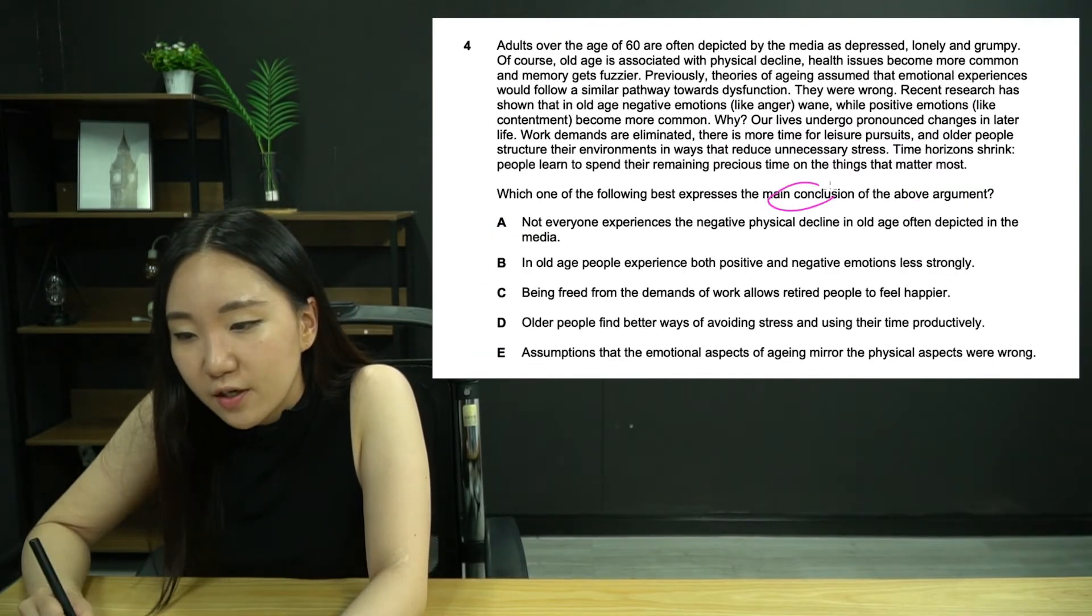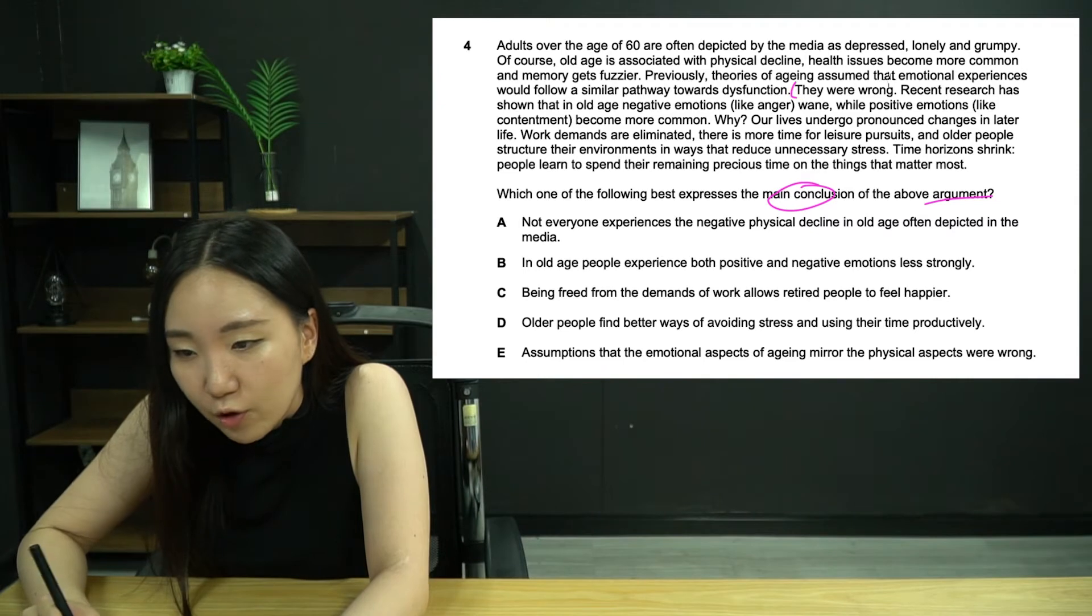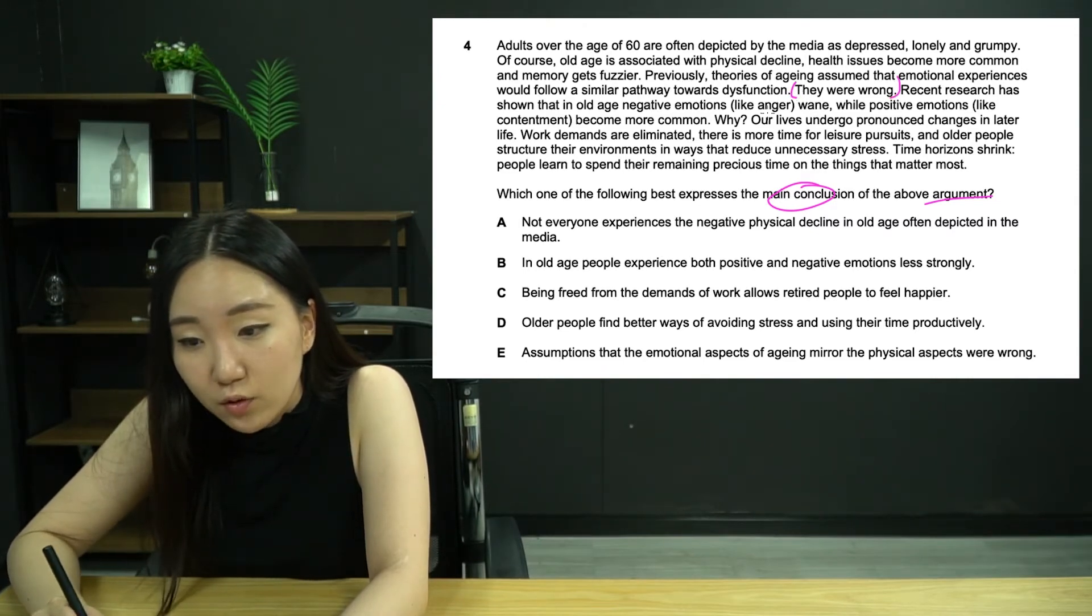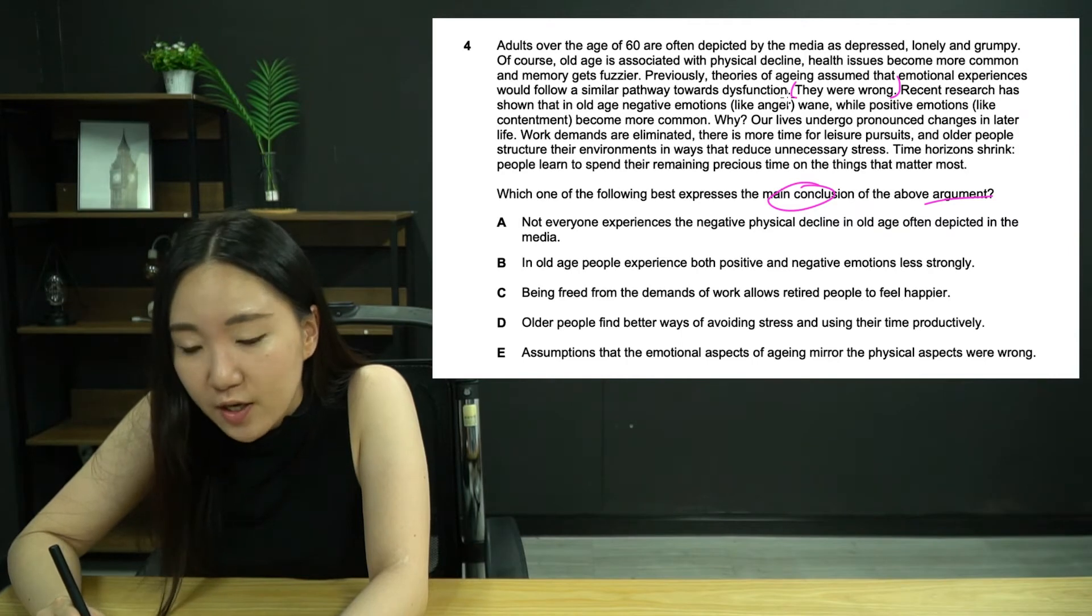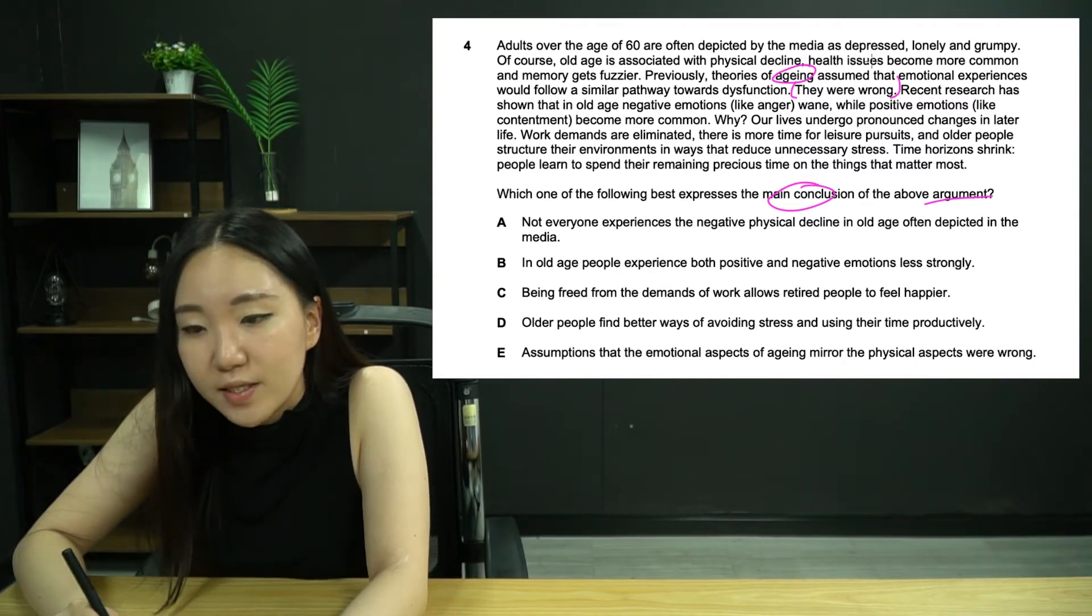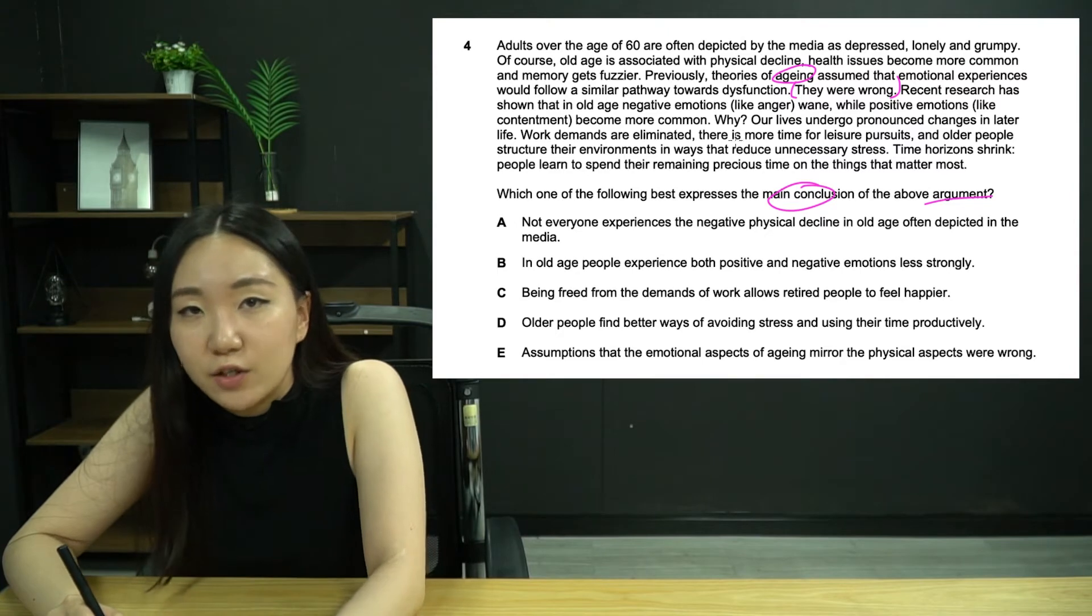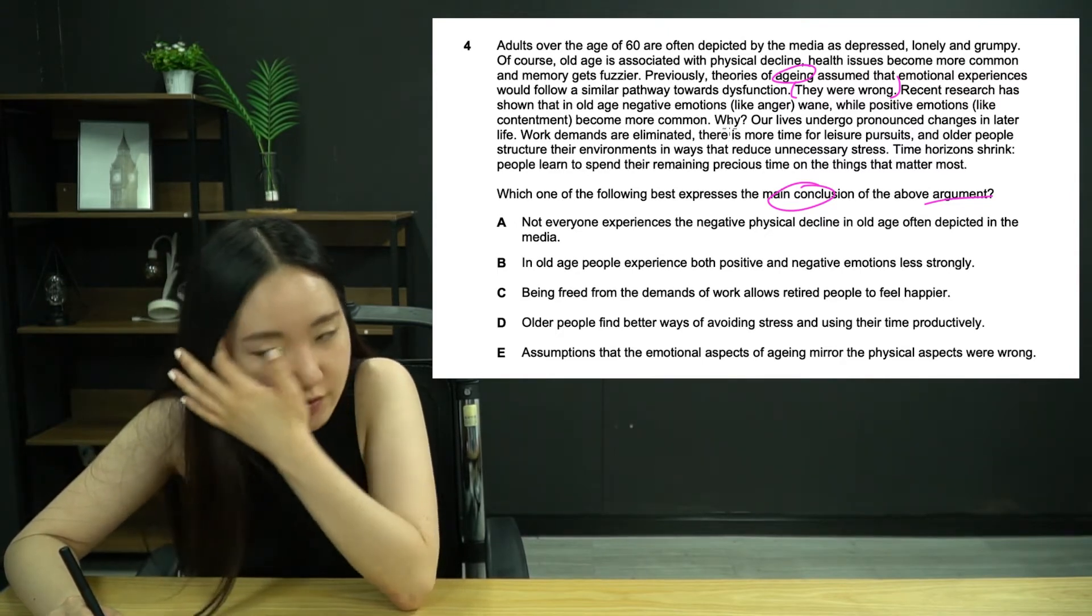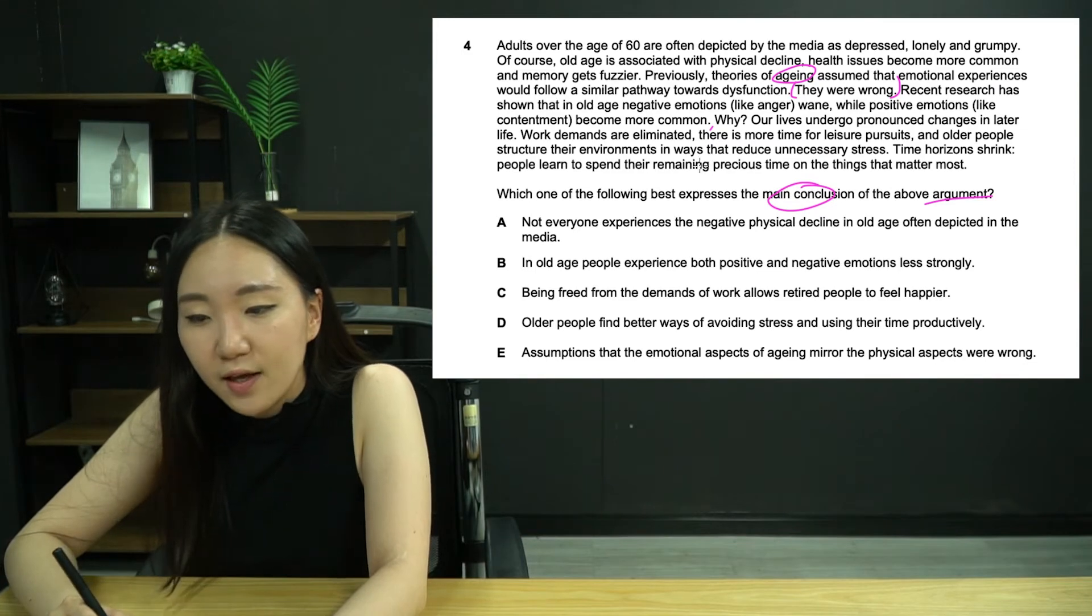Number four. Main conclusion, nice and easy. Just look for the normative statement. Previously theories of aging assumed that emotional experiences would follow a similar pathway towards dysfunction. They were wrong, that is normative. So we're saying that aging assumed that emotional experience would follow a similar pathway towards dysfunction. Old age is associated with physical decline, so we would expect emotional experiences also decline.